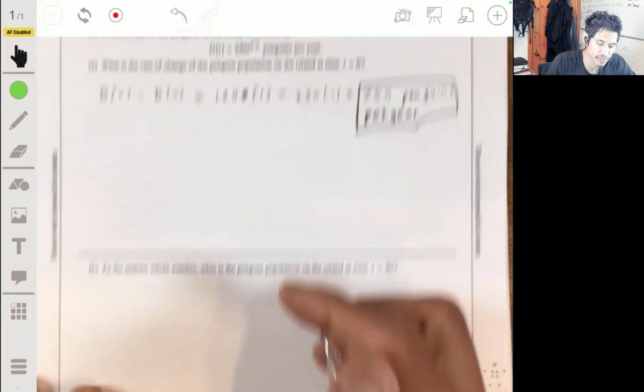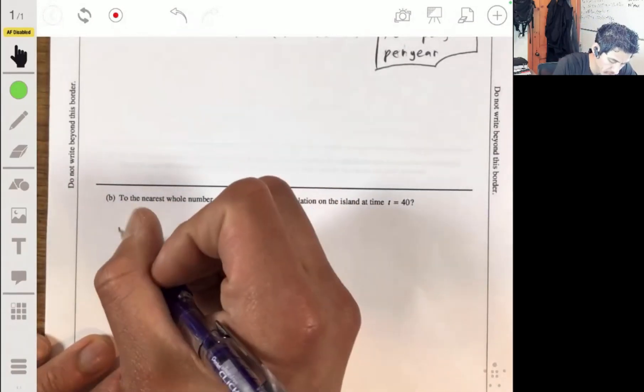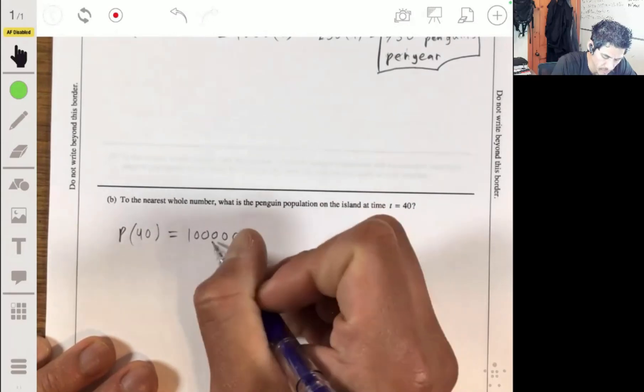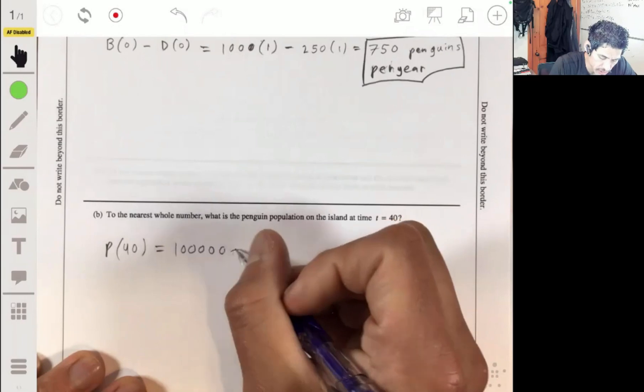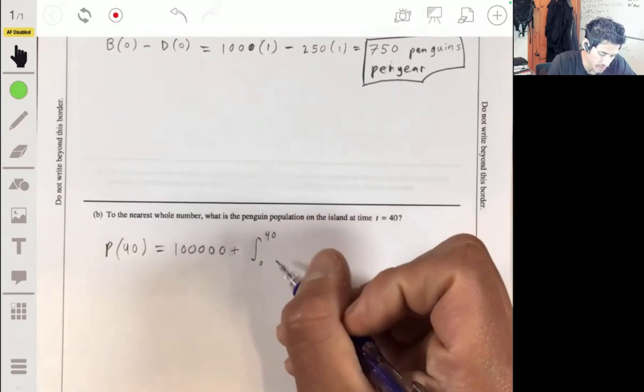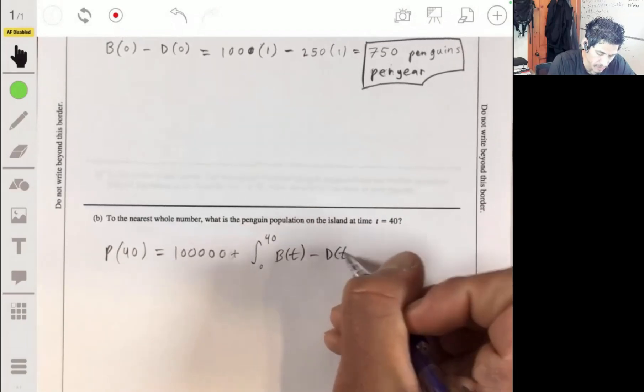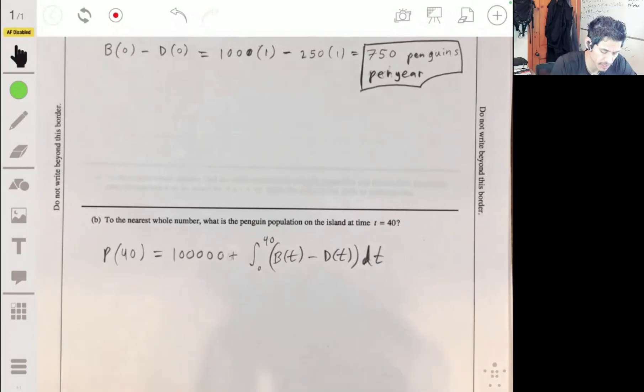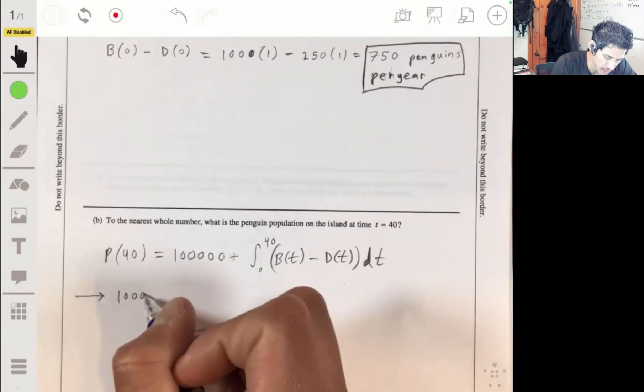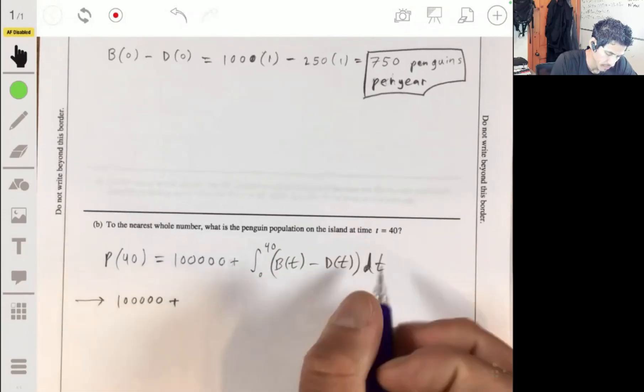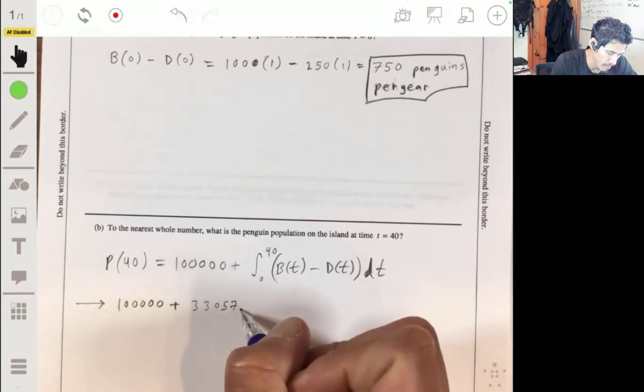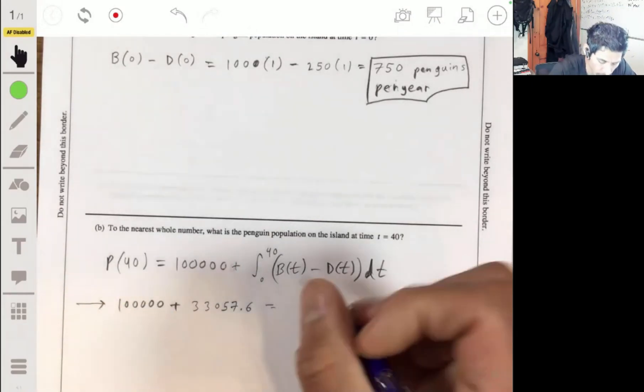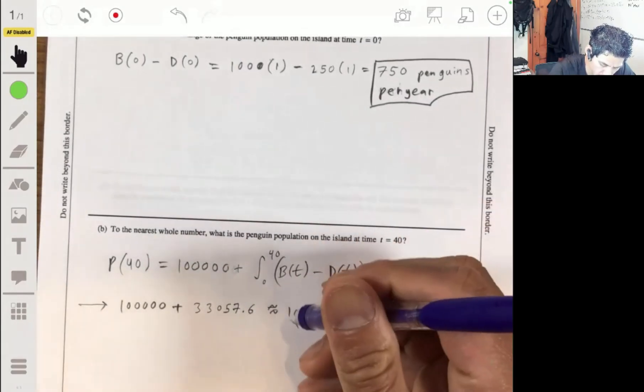We're going to integrate all the way up to 40. Let's remember that the population started with 100,000. So P(40) is going to be 100,000, which is the initial value, plus the integral from 0 to 40 of B(t) minus D(t). Integrating this, we can just use our calculator and you get 100,000 plus 33,057.6, which gives you 133,057.6. Rounded to the nearest whole number will give you 133,058.